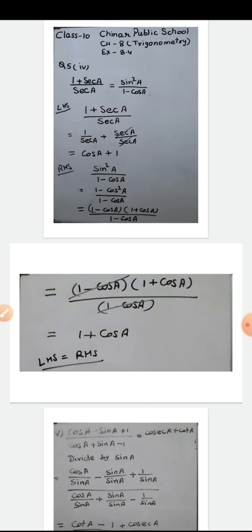So 1 + cos A is what we got from solving the left hand side, and the same 1 + cos A is obtained from solving the right hand side. At this step, LHS = RHS. Part 4 is proved.